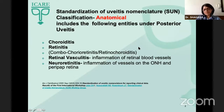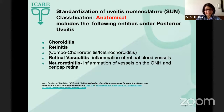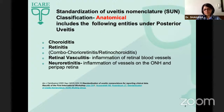The SUN classification gives an anatomical classification of posterior uveitis into choroiditis, retinitis, a combination of the two, retinal vasculitis, as well as neuroretinitis.